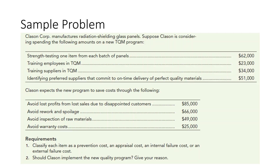Let's look at an example of how we might prepare a cost of quality report. Clayson Corporation manufactures Radeon shielding glass panels. Suppose Clayson is considering spending the following amounts on a new total quality management program.